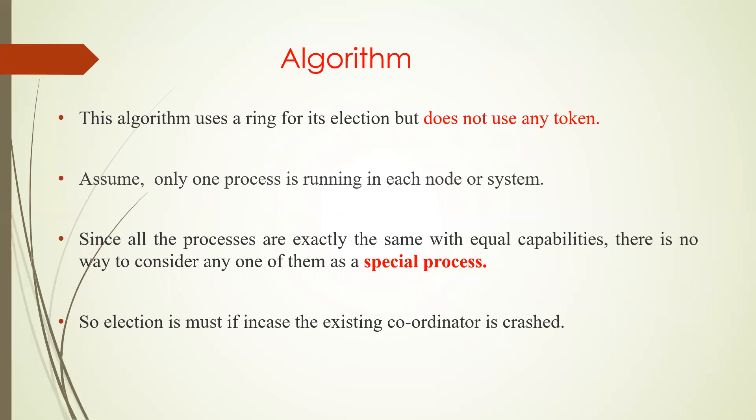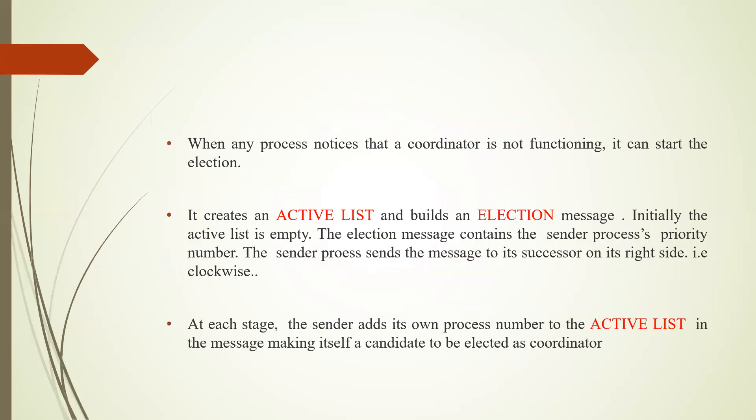We assume only one process runs on each node. Since all processes have exactly equal capabilities and capacities, there is no way to consider any one of them as a special process. So we can choose any process as a coordinator, which means we must conduct an election, especially if the existing coordinator has crashed.